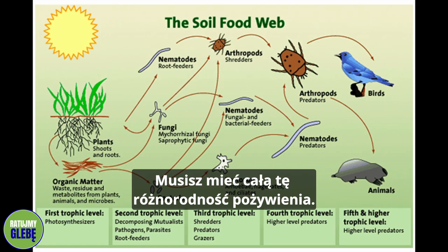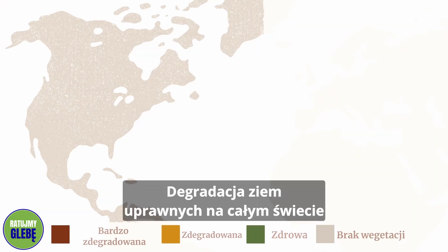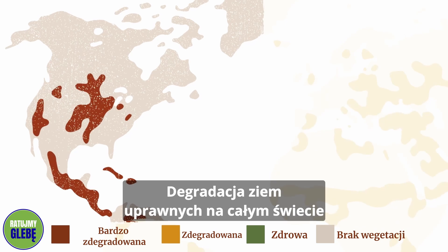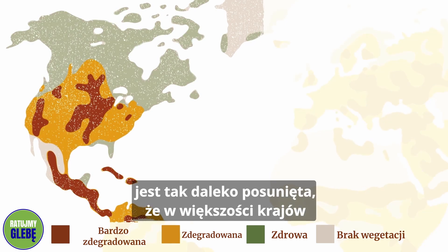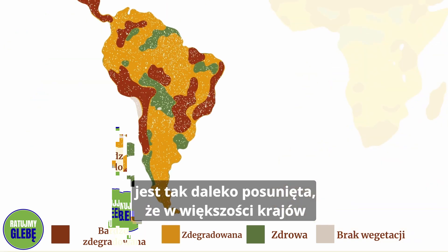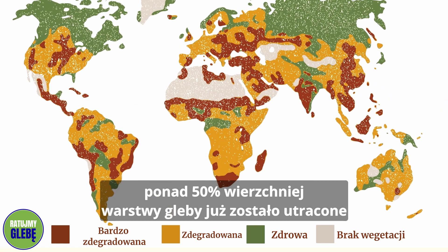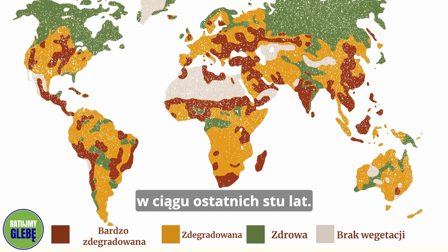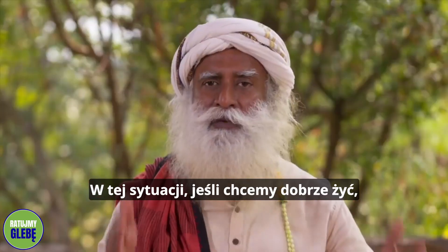You've got to have all of that diversity of food. Right now, agricultural soils across the world — the depletion is so heavy. In most countries, more than fifty percent of the topsoil is already gone in the last hundred years.